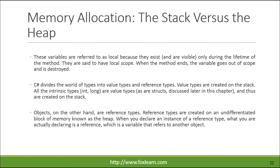C# divides the world of types into value types and reference types. Value types are created on the stack. All the intrinsic types — int, long — are value types, as are structs, and thus are created on the stack. Objects, on the other hand, are reference types. Reference types are created on an undifferentiated block of memory known as the heap. When you declare an instance of a reference type, what you are actually declaring is a reference, which is a variable that refers to another object.